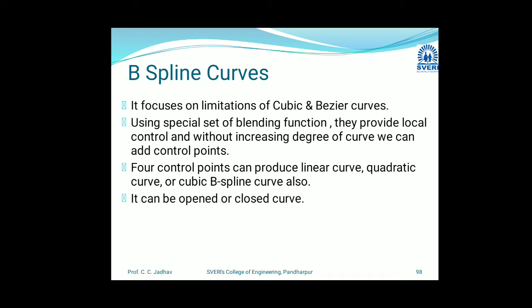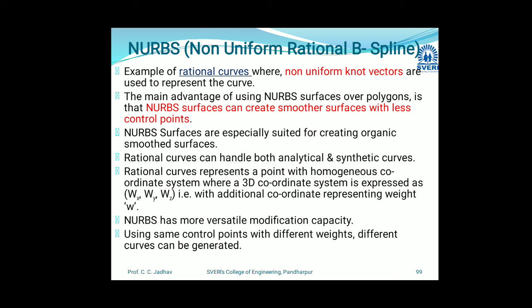The next curve is NURBS — Non-Uniform Rational B-Spline. This is an example of rational curves where non-uniform knot vectors are used to represent the curve. It offers great flexibility and precision for handling both analytic and modeled shapes, and is commonly used in CAD, CAM, and CAE applications.